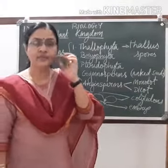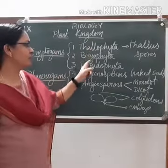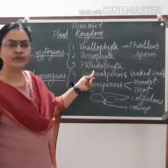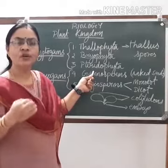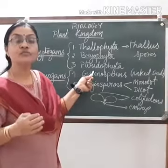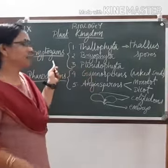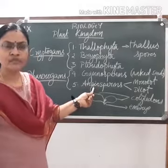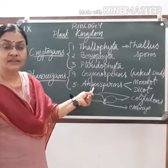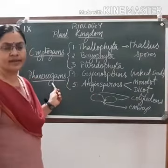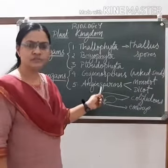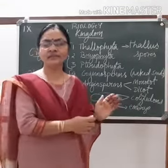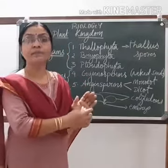So in Plantae, the different divisions are Thallophyta, Bryophyta, Pteridophyta, Gymnosperms, and Angiosperms. Thallophyta, Bryophyta, and Pteridophyta are primitive plants that do not possess external reproductive organs, reproduce through spores, and are called Cryptogams. Gymnosperms and Angiosperms are higher plants that produce flowers or seeds and are called Phanerogams. The seeds produced by Angiosperms may be monocots or dicots.